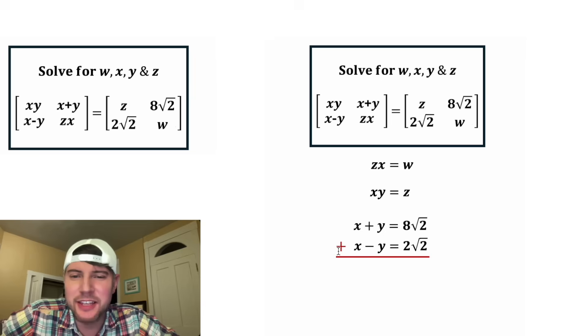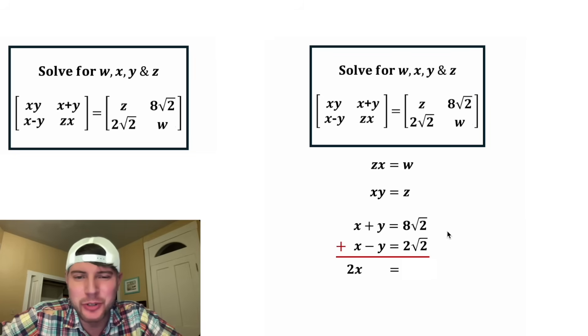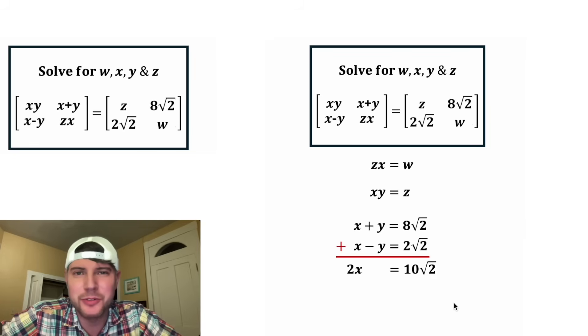On the left-hand side, x plus x is 2x, and y plus negative y is nothing. And on the right-hand side, 8 root 2 plus 2 root 2 is 10 root 2. Now we have a single equation with one variable x. Let's solve for x. We can divide both sides by 2, and we end up with x equals 5 root 2.